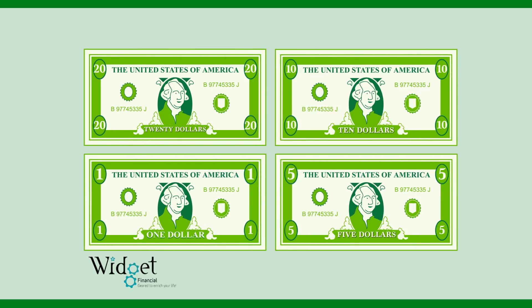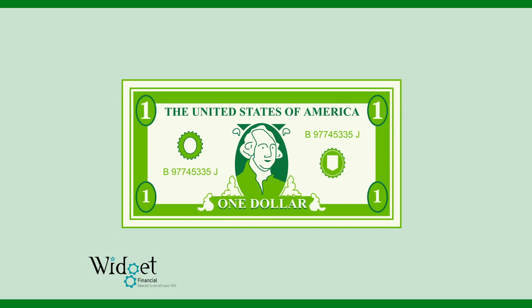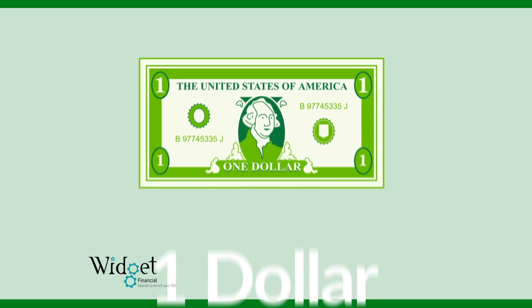Each type of dollar bill is the same size, but is worth a different amount. This is what a one dollar bill looks like. Notice it has one in each corner. That means it is worth one dollar.